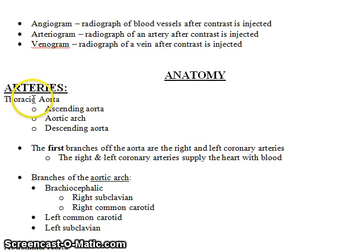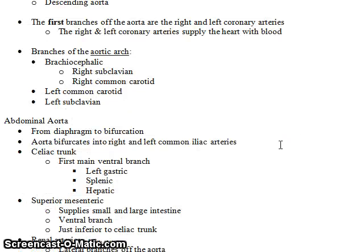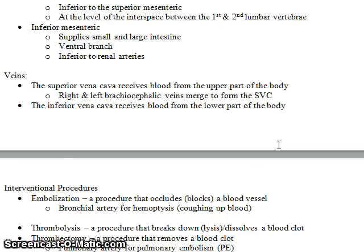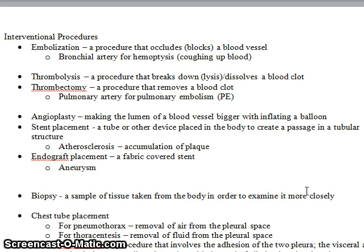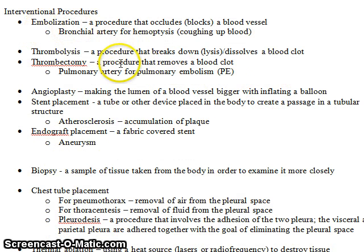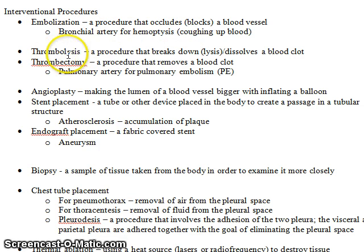Then we get into the actual anatomy, which is summarized in words, so it will be important to read over this — the veins and the actual interventional procedures. This is a simplified explanation of these procedures, but still important basic information. An embolization procedure occludes a blood vessel; for example, a patient with hemoptysis — coughing up blood — may have the bronchial artery embolized. Thrombolysis is a procedure that breaks down or dissolves a blood clot.